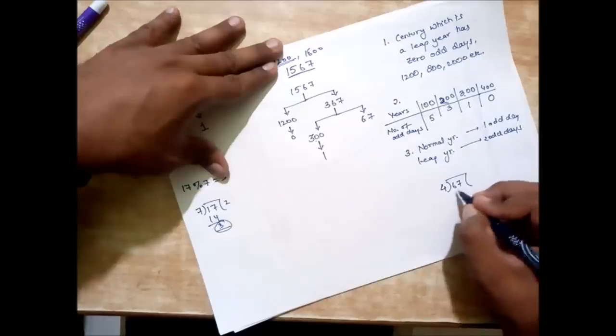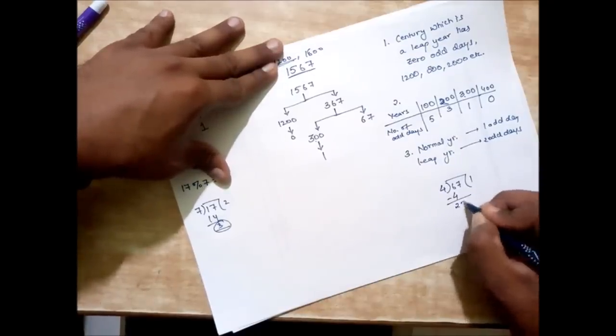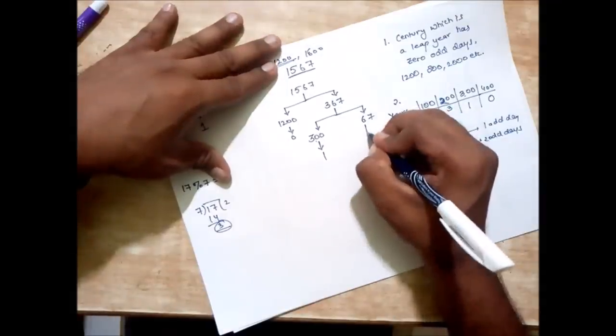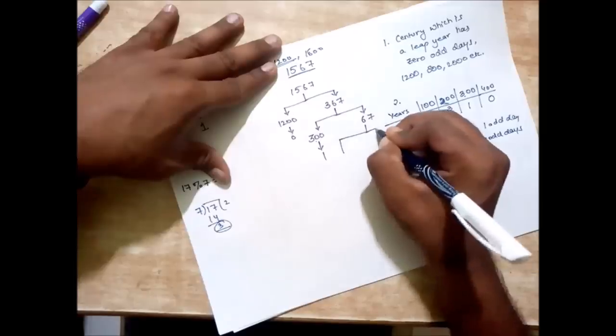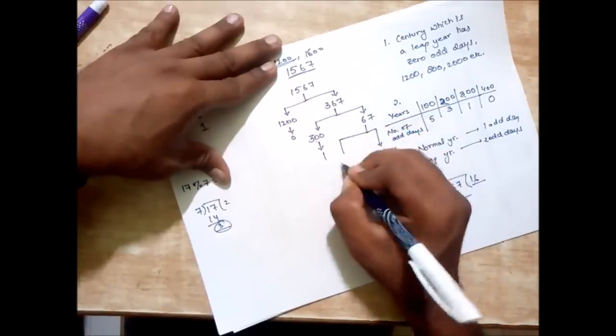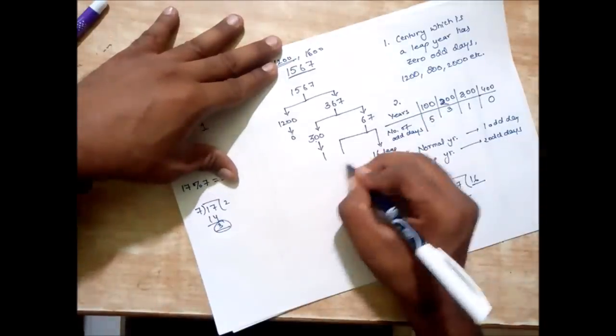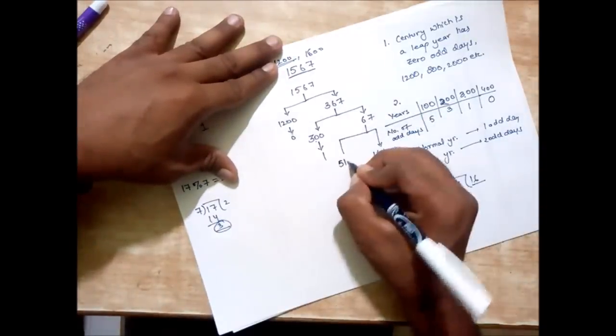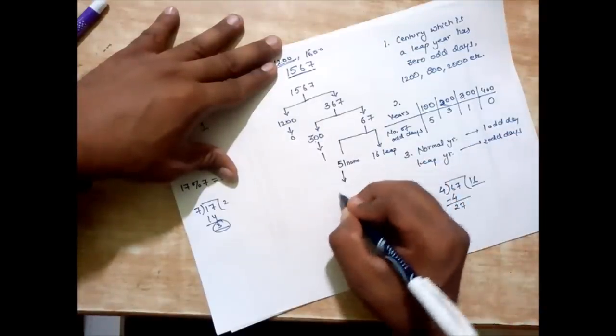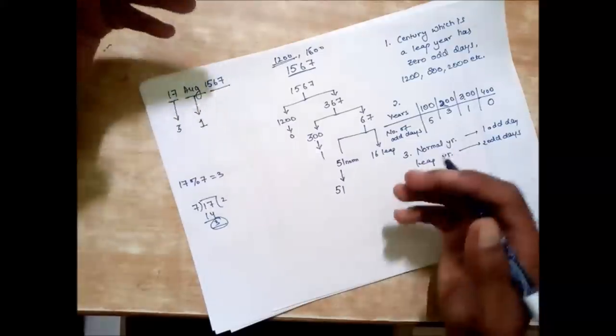So 67 divided by 4: 16 years are the leap years. So I can write it like 16 leap years, and if I subtract I'm gonna get 51 normal years. So according to the third point, normal year has one odd day, so 51 can be simply written as 51.